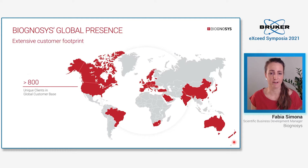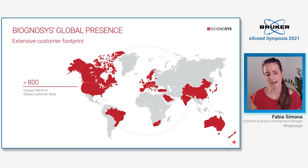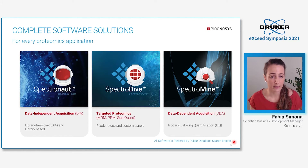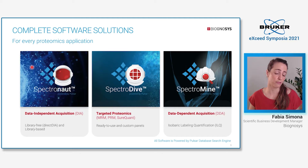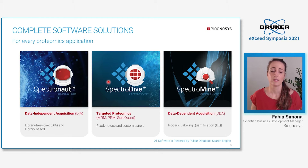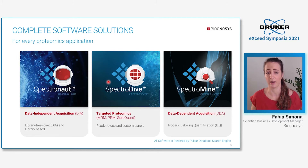This allows us to satisfy our growing customer base. We boast over 800 customers around the globe. Our business divides into contract research services and products. We offer complete software solutions for every proteomics application. Spectronaut is our flagship software for the analysis of data-independent acquisition, DIA, and has two workflows: a library-based as well as a library-free or direct DIA workflow. SpectroDive is our software for the analysis of targeted proteomics, such as MRM, PRM, and short quant.